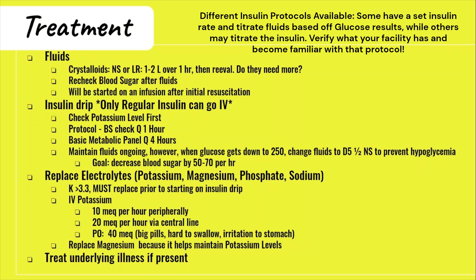While your patient is on the insulin drip, you will be checking the blood sugar every single hour in order to adjust the rate of the insulin drip depending on the results. You will also draw and check a basic metabolic panel every four hours to assess your patient's gap and to ensure that you are keeping track of electrolytes — especially potassium. Is it going down? Is it going up? You will also have an order for a fluid infusion throughout.